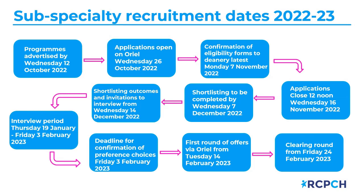Here is the timeline. Programmes were advertised last Wednesday — you can go to our website and the applicant guidance page to see all available posts, with job descriptions available through a link on SharePoint. Applications open in Oriel next Wednesday and close at 12 noon on Wednesday the 16th of November. Confirmation of eligibility forms need to be with the deanery by Monday the 7th of November at the latest — that's the latest it needs to be with the deanery, not when it's submitted to us.